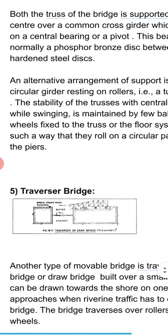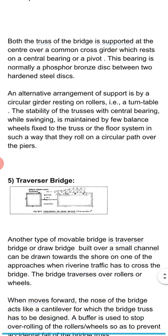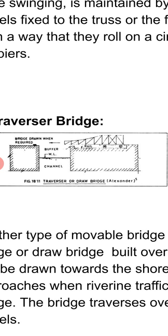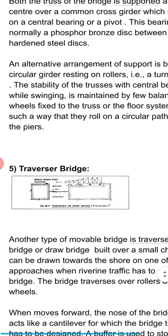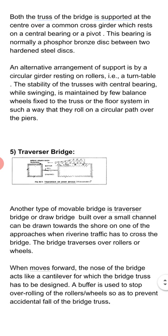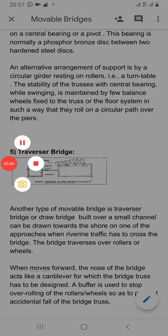The last type is the traversal bridge. Nowadays nobody is constructing this traversal bridge either. This bridge moves over rollers from one shore to another shore. For the passing of the boat, the bridge moves from one point to another point so the boat can move through the channel, and then the bridge moves back using some mechanism and rollers. So these are the five types of movable bridges: swing bridge, bascule bridge, traversal bridge, transporter bridge, and lift bridge. Thank you very much for watching.